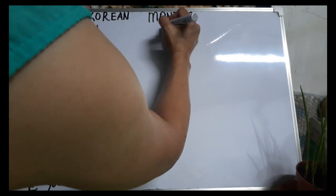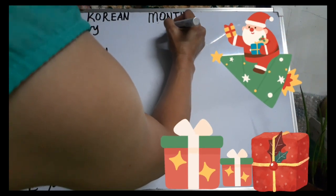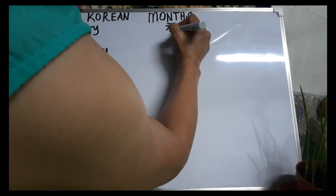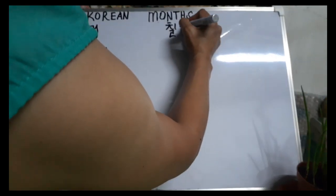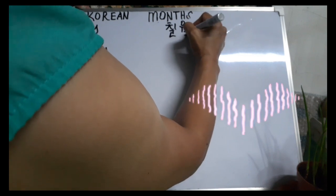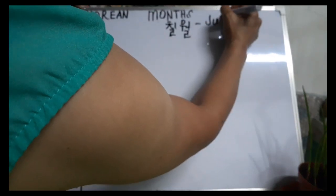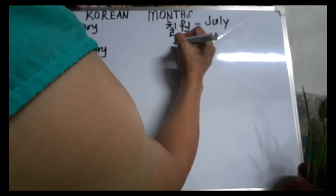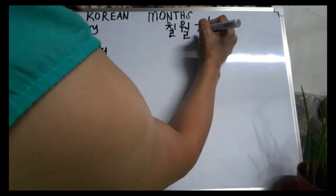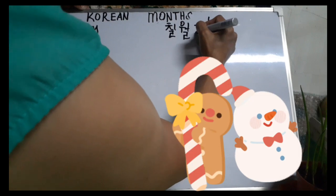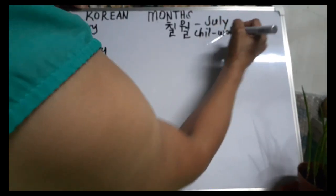July — Chel Wall. Okay. Chel Wall. This is July. Okay — Chel Wall. Chel Wall.